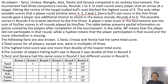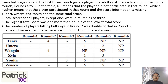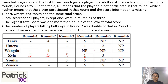A hyphen means the player participated in the round but score information is missing. From the table, since Zyla played in rounds 4, 5, and 6, she must have got three bonus points, which means she must have scored 5, 5, 5 in rounds 1, 2, and 3.